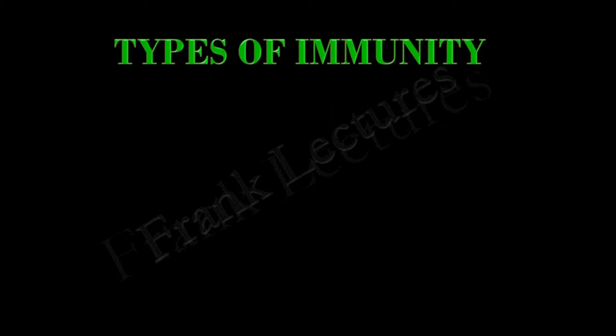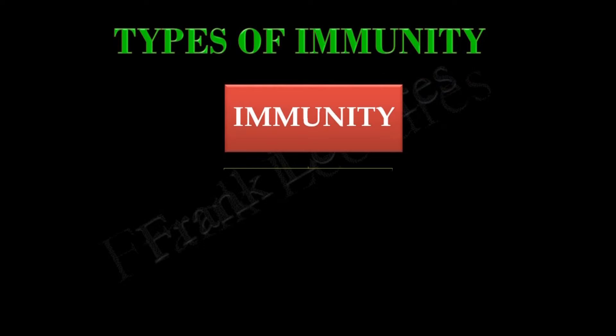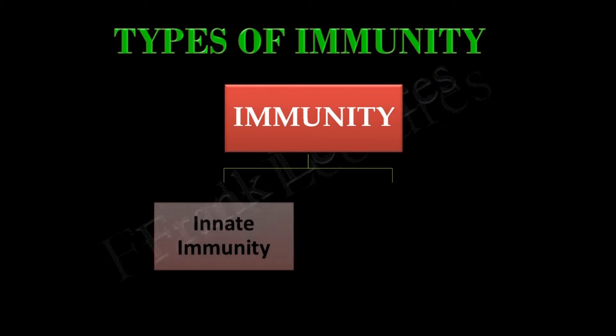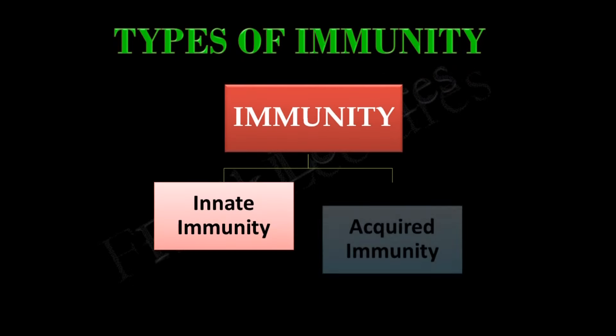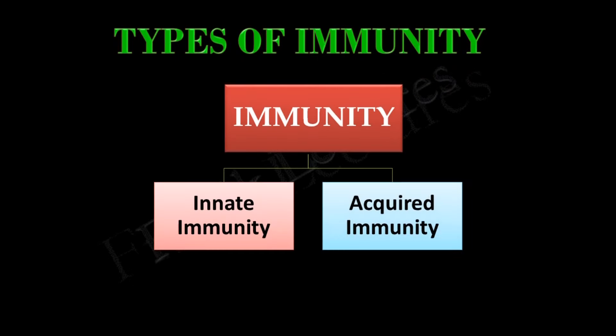Types of immunity. Immunity is of two types: innate immunity and acquired immunity. Acquired immunity is also known as adaptive immunity.